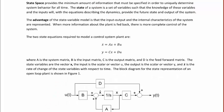State space provides the minimum amount of information that must be specified in order to uniquely determine system behavior for all time. The state of a system is a set of variables such that the knowledge of these variables and the inputs will, with the equations, describe the dynamics and provide the future state and output of the system.